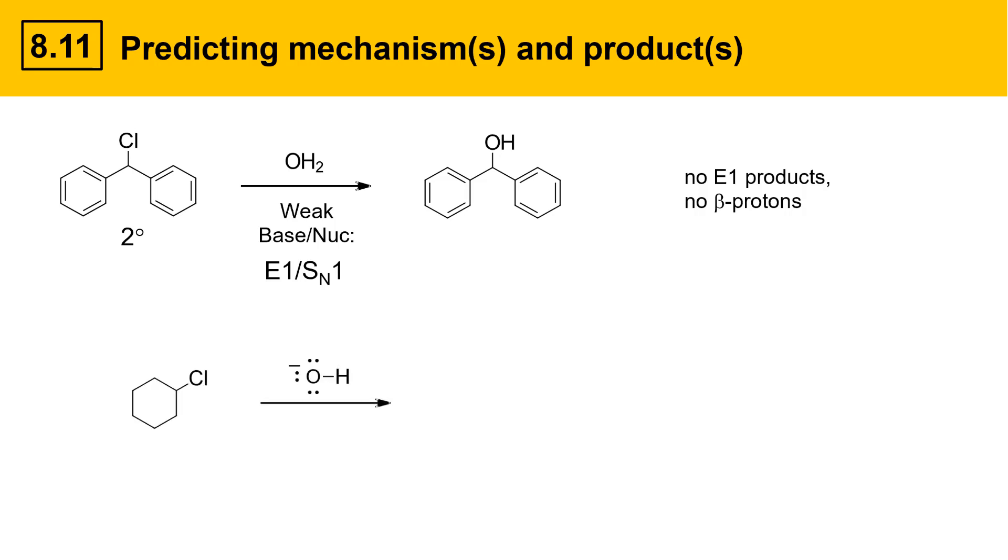Here's a reaction of an alkyl chloride reacting with hydroxide. This alkyl chloride is also secondary, so it could react theoretically by SN1, SN2, E1, E2. But hydroxide is a strong base, strong nucleophile, so that promotes the E2, SN2 type reaction products. Secondaries can undergo both SN2 and E2, so those products are all possible. We could get a substitution product and an elimination product.